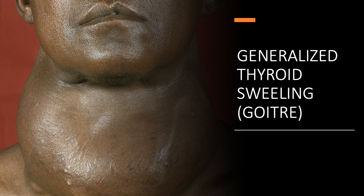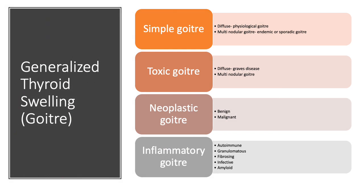The next morphological abnormality is generalized thyroid swelling, or goiter. Goiters are classified into four categories: simple goiter, toxic goiter, neoplastic goiter, and inflammatory goiter. Simple goiters can be diffuse — as in physiological goiter — or multinodular, as in endemic and sporadic goiters. Toxic goiters can be diffuse, as in Graves' disease, or multinodular. Neoplastic goiters can be benign or malignant. Inflammatory goiters can be autoimmune, granulomatous, fibrosing, infective, or amyloid.